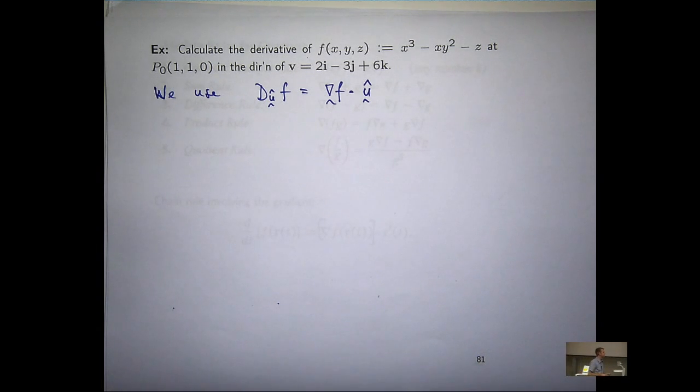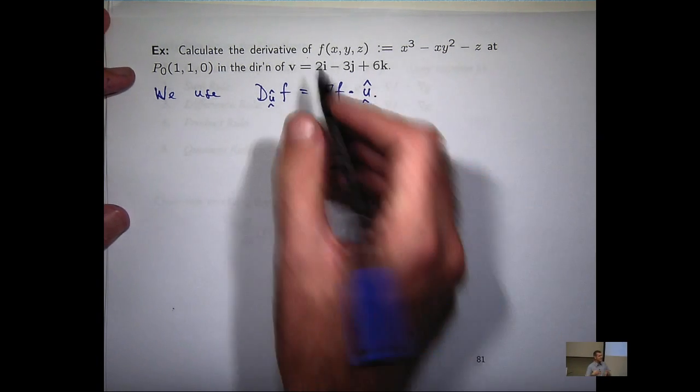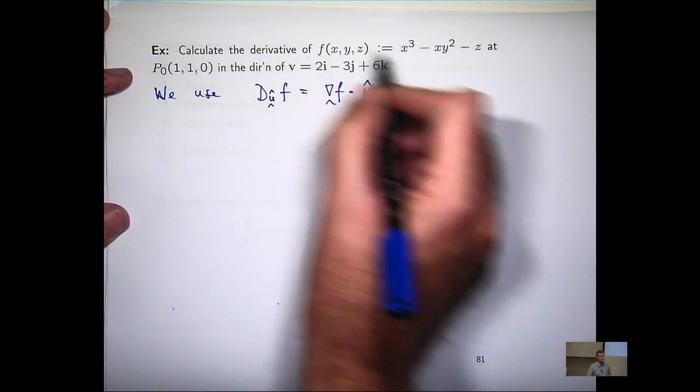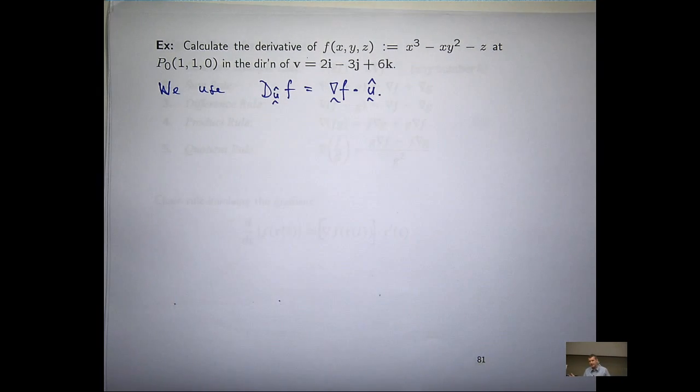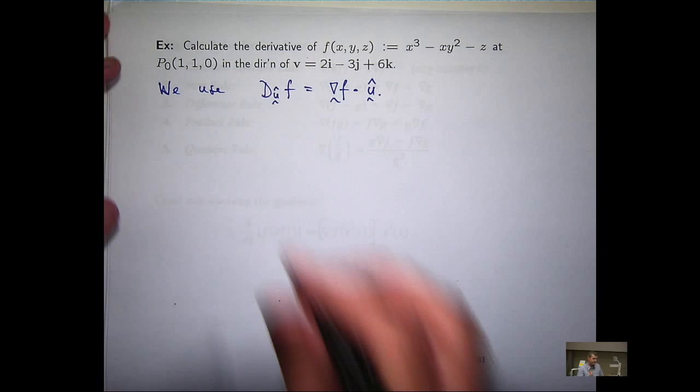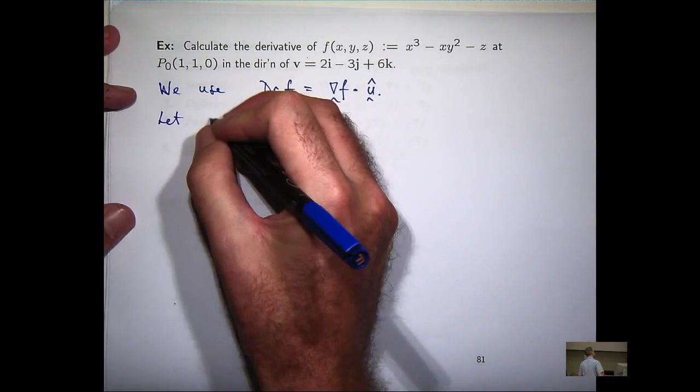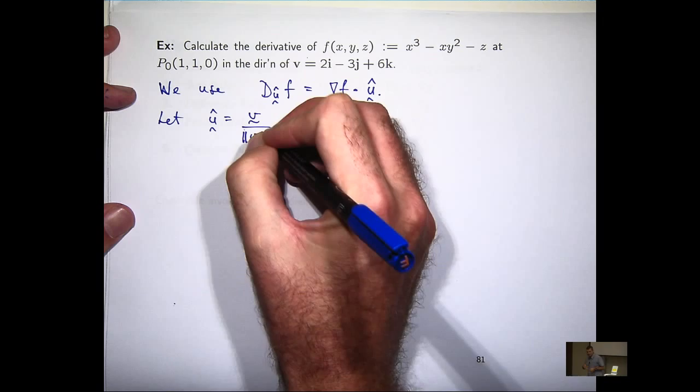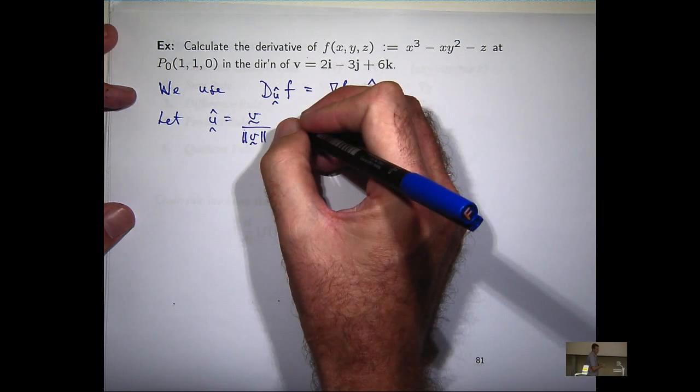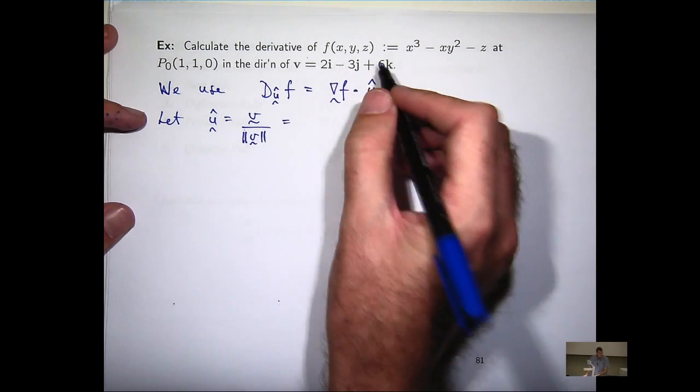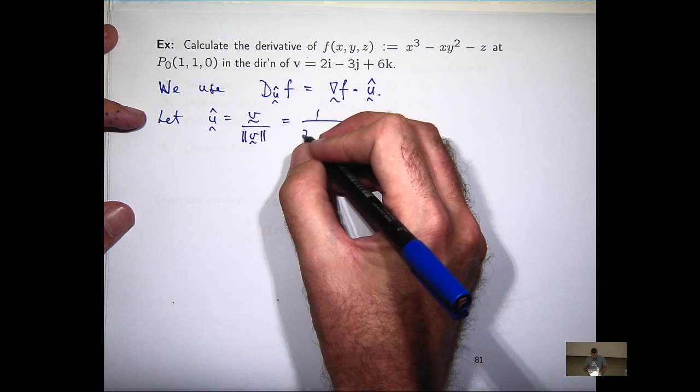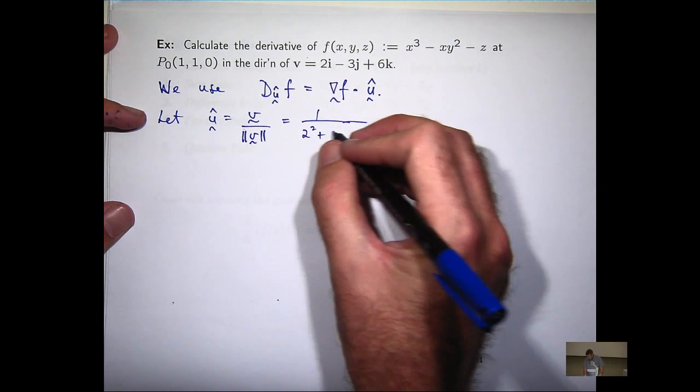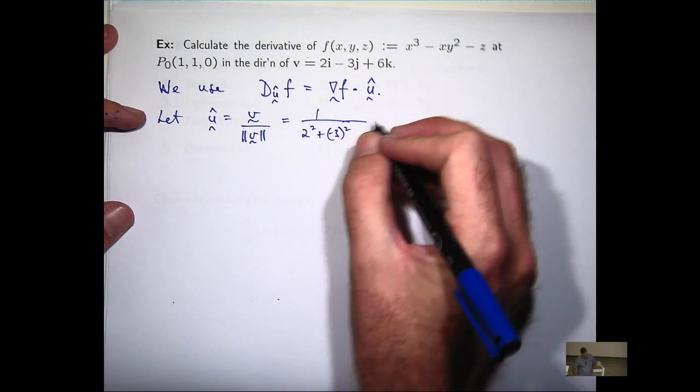So let's compute the components. Firstly, is this a unit vector? Is it? No, it's not. So let's compute it. So you square the components and add them in square root and then divide.